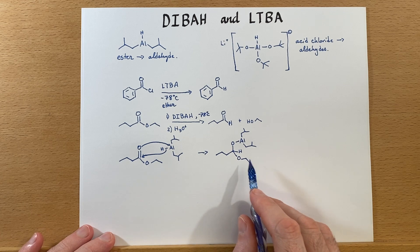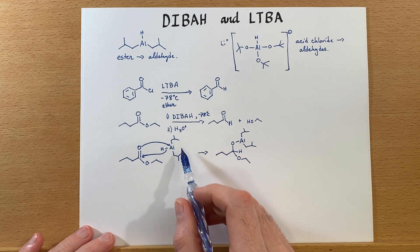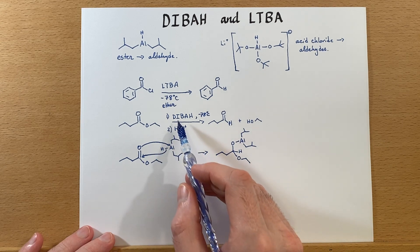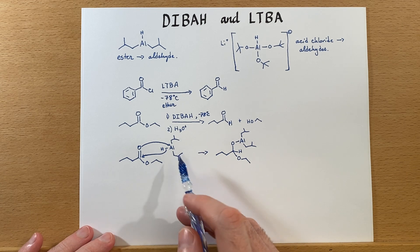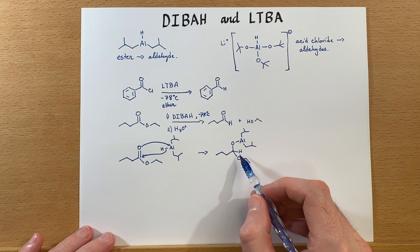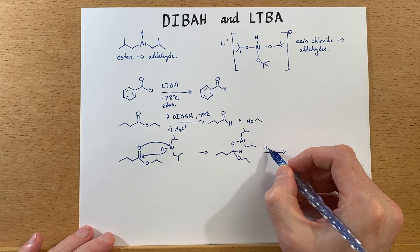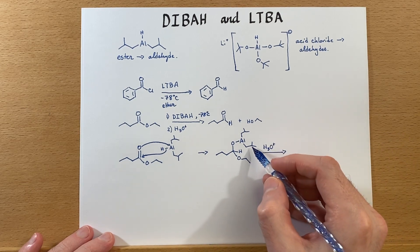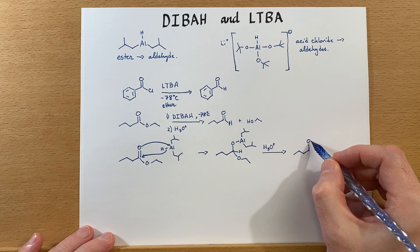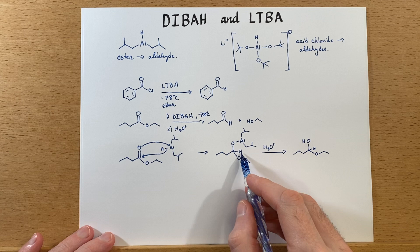This complex is stable at the low temperatures. Next, we add acid and let the reaction warm up. The acid reacts with any remaining DIBAH, removing it from the reaction, and then hydrolyzes this portion. Adding the acid removes the aluminum portion, and what we're left with is a hemiacetal — we can draw in that hydrogen that was added.